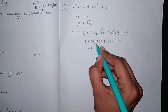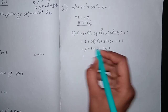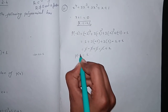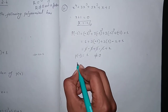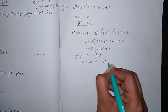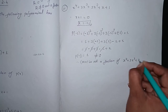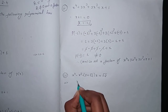Calculating: 1 - 3 + 3 - 1 + 1 = 1. The -3 and +3 cancel, and +1 and -1 cancel, leaving 1. So p(-1) = 1 ≠ 0. Therefore, (x+1) is not a factor of x⁴ + 3x³ + 3x² + x + 1.